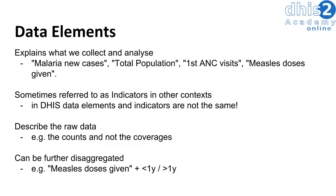By now, we have an idea that data elements explain what we collect and analyze. While data elements are sometimes referred to as indicators in other contexts, in DHIS2 data elements and indicators are not the same. Data elements describe the raw data, whereas indicators are calculated values that typically use two or more data elements in their calculation.